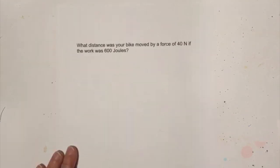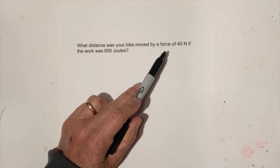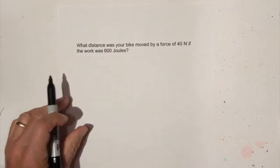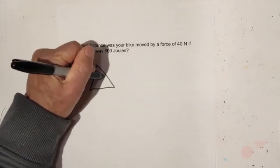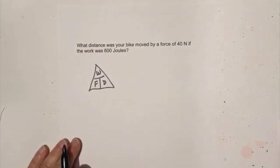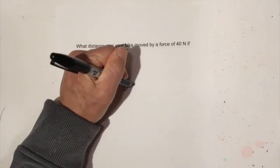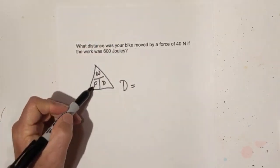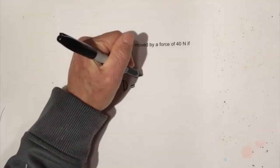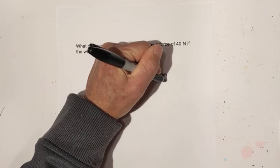One more example. In this one what distance was your bike moved by a force of 40 newtons if the work was 600 joules? We are looking for distance so it's work divided by force. You have 600 joules of work, rewrite that as newton times meters.